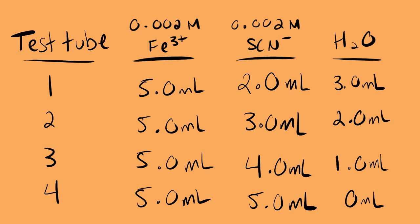To make sure that we actually get to the same total volume for each of the reactant sets — to make sure that we're actually diluting the iron to the proper initial concentration so it's all the same — we're also going to be adding some excess water into test tubes one through three to make sure that the total volume of solution is going to be 10 milliliters.